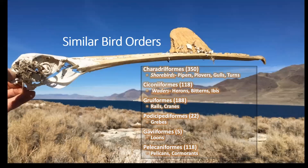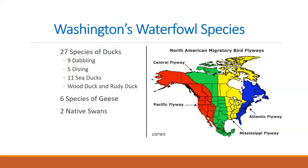Some similar bird orders we might think of when we think about waterfowl but fall into different orders include shorebirds — pipers, plovers, gulls, and terns — as well as waders: 118 species including herons, bitterns, ibis, rails, and cranes. There are also grebes, loons, and pelicans and cormorants. I found a pelican skull on Anaho Island in Nevada on Pyramid Lake while working with the Fish and Wildlife Service — that chip at the top helps them fish.